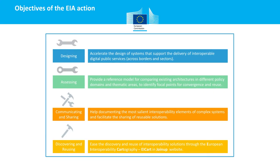The EIA action has four main objectives. The EIA and the EIA cart can be used by public administrations in Member States to improve interoperability: to accelerate the design of systems supporting interoperable digital public services across borders and sectors; for assessing, meaning comparing existing architectures in different policy domains and thematic areas; for communicating and sharing, meaning documenting the most salient interoperability elements of complex systems; and for reusing, meaning to discover and reuse interoperability solutions through the European interoperability cartography.